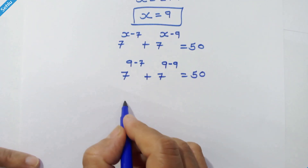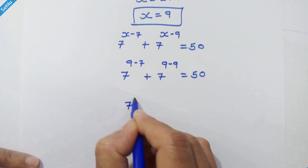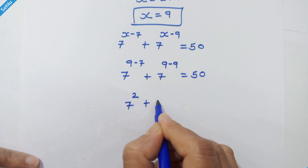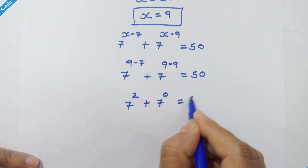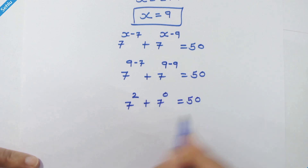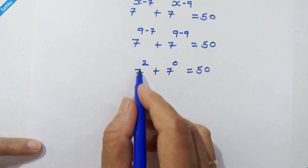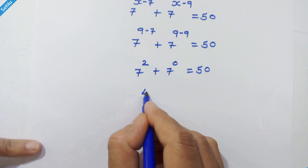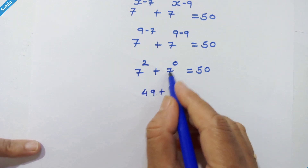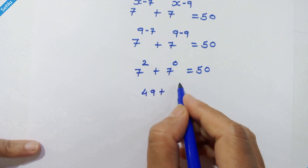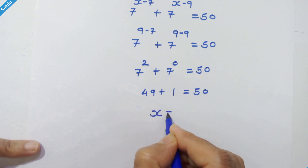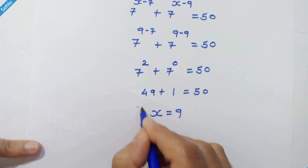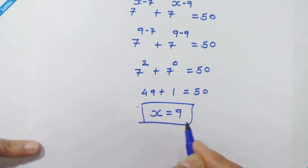So we have 7 raised to 2 plus 7 raised to 0 is equal to 50. 7 square is 49, plus 7 raised to 0 is 1, giving 50. So x equal to 9 is the correct answer.